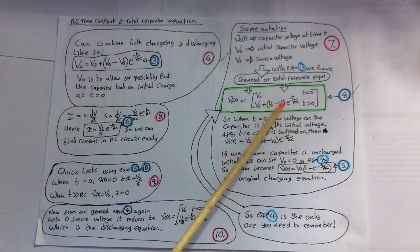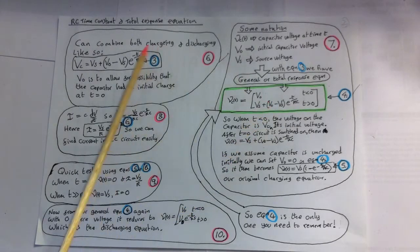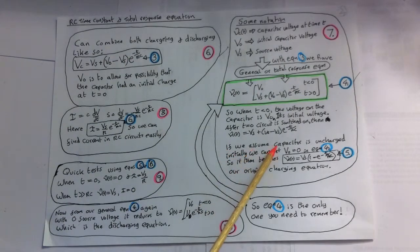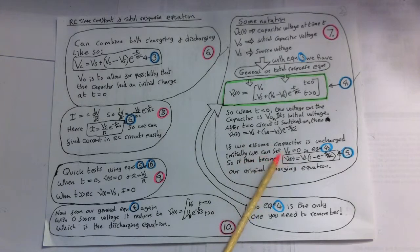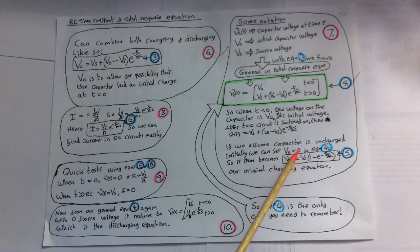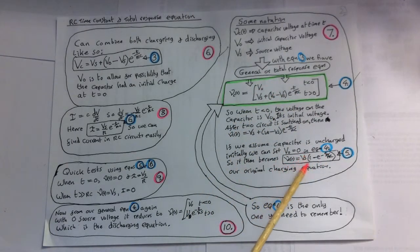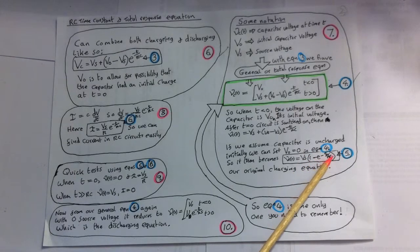This is called the complete or total response equation, which is a more formal equation of equation 3. If we assume, for example, that the capacitor is uncharged initially, we can set V0 equals to 0, in equation 4. So when that's 0, it becomes VCT equals Vs brackets 1 minus e to the minus T over RC.